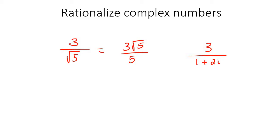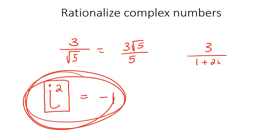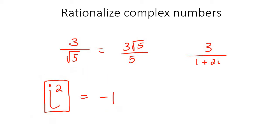Before we begin, I want you to remember the golden rule I've mentioned before. i to the power of 2 — what is that equal to? Minus 1. Please remember that for this lesson. It's very important. i to the power of 2 is minus 1.